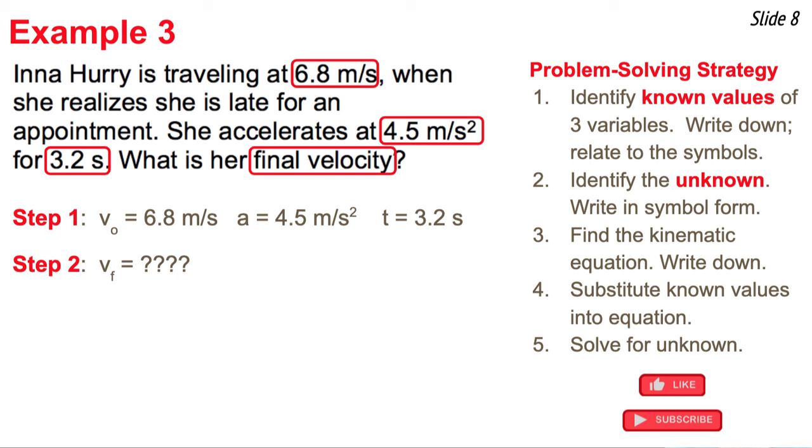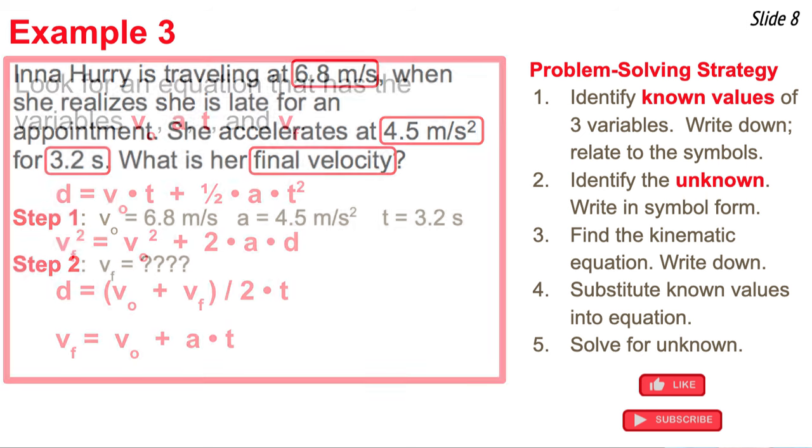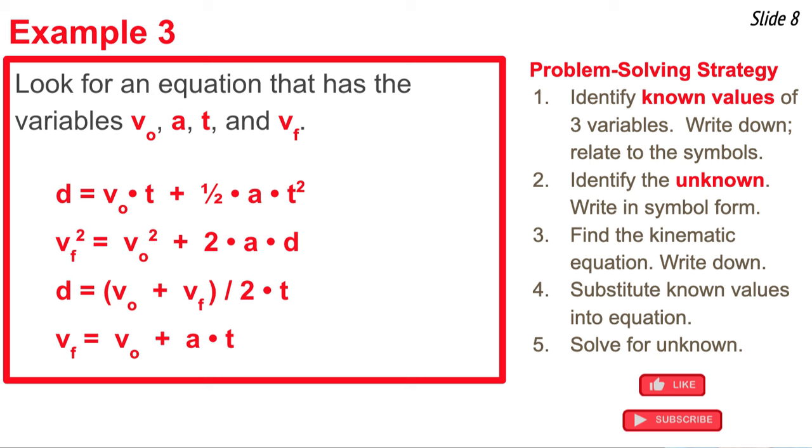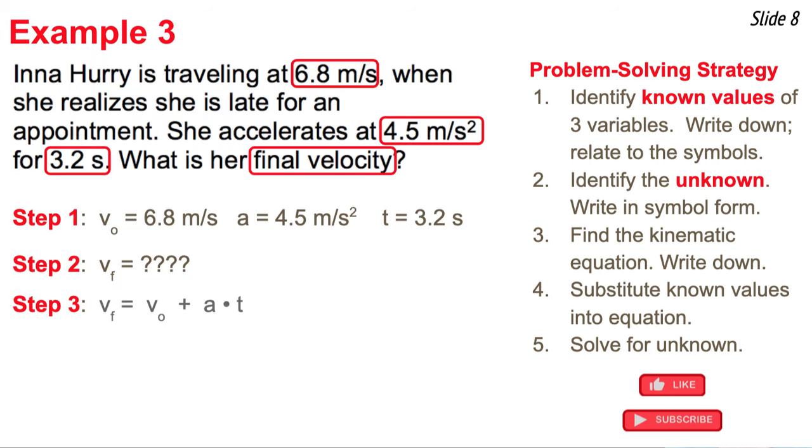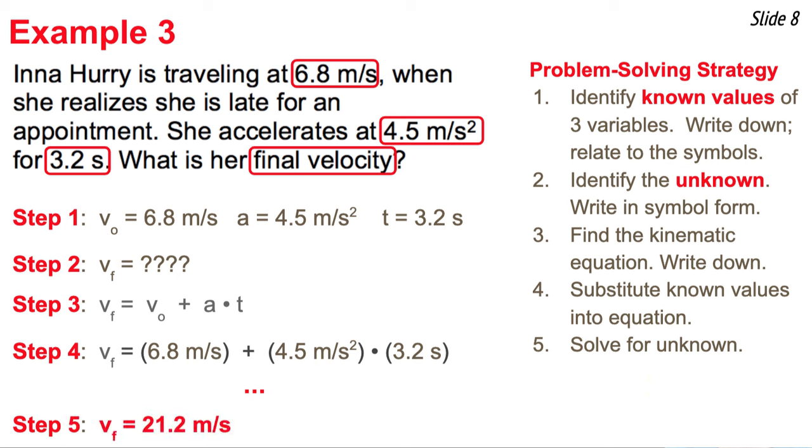I'm looking for VF. Now step three is find the kinematic equation that contains these three known variables and the one unknown variable. I'm looking for the one equation that has V original, A, T, and VF. And as I scan my list, I notice the fourth equation in the list is the one I want to use. So I write it down. There it is. Now I take the known values and I substitute in. Looks something like that. And then I solve for V final. Pull out your calculator. You end up with 21.2 meters per second.